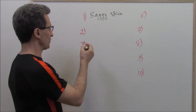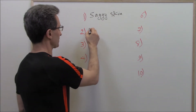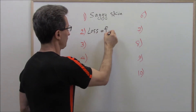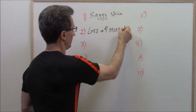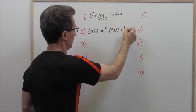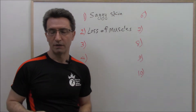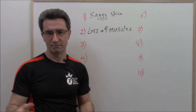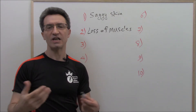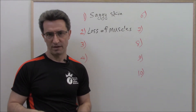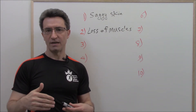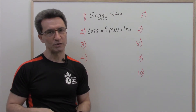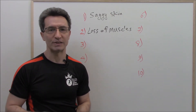Complication number two is loss of muscle mass. Those people who lose weight rapidly, because they don't exercise enough and also because they don't take the right amount of protein, they lose some of their muscle mass.